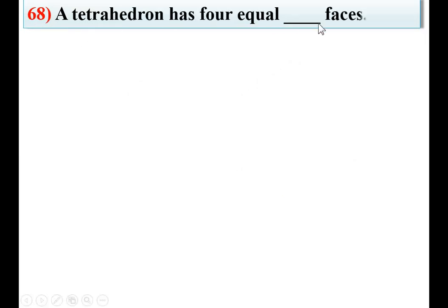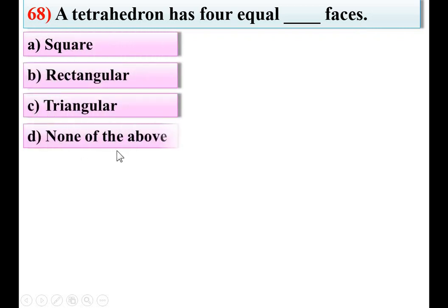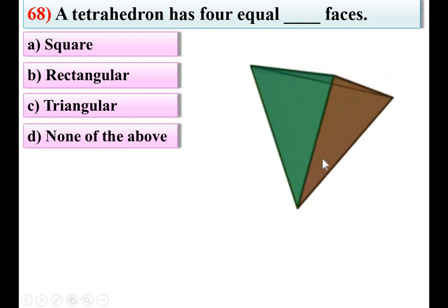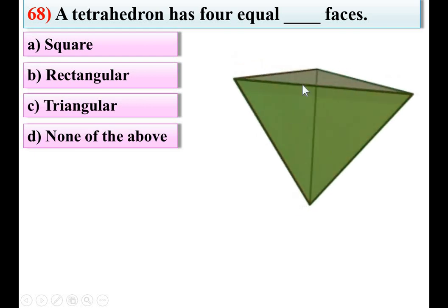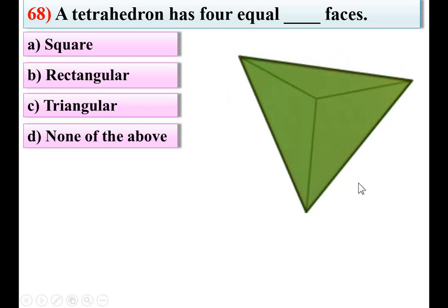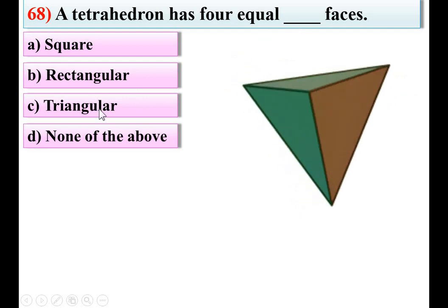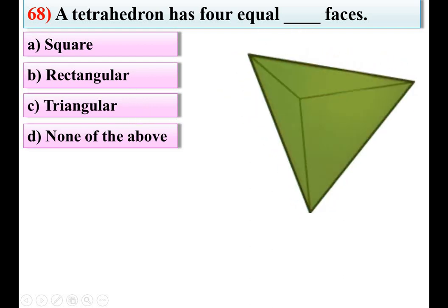Question 68: A tetrahedron has four equal blank faces — options: A: square, B: rectangular, C: triangular, D: none of the above. Considering the figure of the tetrahedron, it has four equal triangular faces. So C is the right answer.